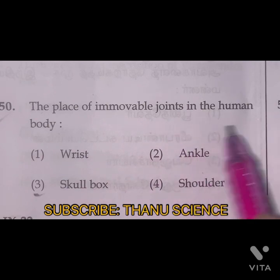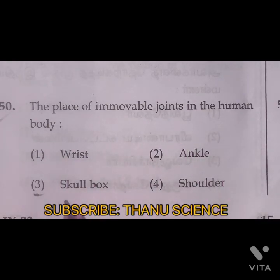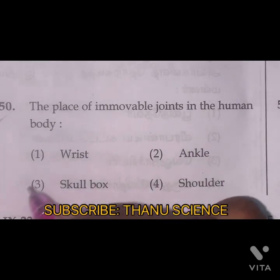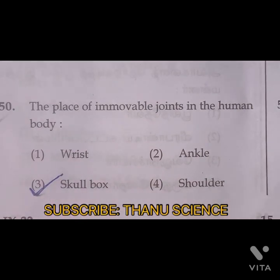Question 50: The place of immovable joints in the human body is the skull. Option 3 is the right answer. Thank you, students.